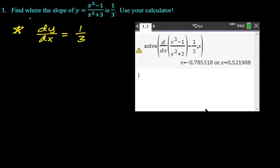So I just asked the calculator to solve when d/dx, the derivative of x cubed minus one over x squared plus three is equal to one third for x and it spit out the values. So then I would just write them down. So x is approximately negative 0.785, x is approximately 0.522. So that's what we get for that.